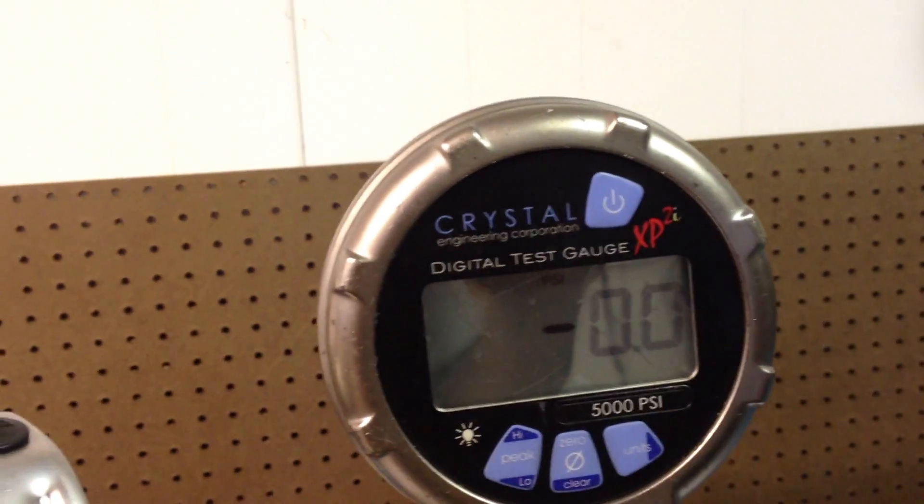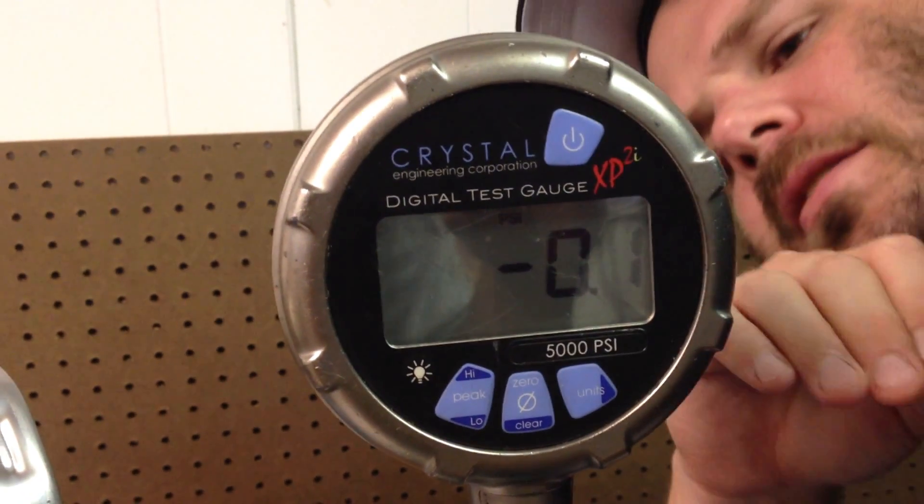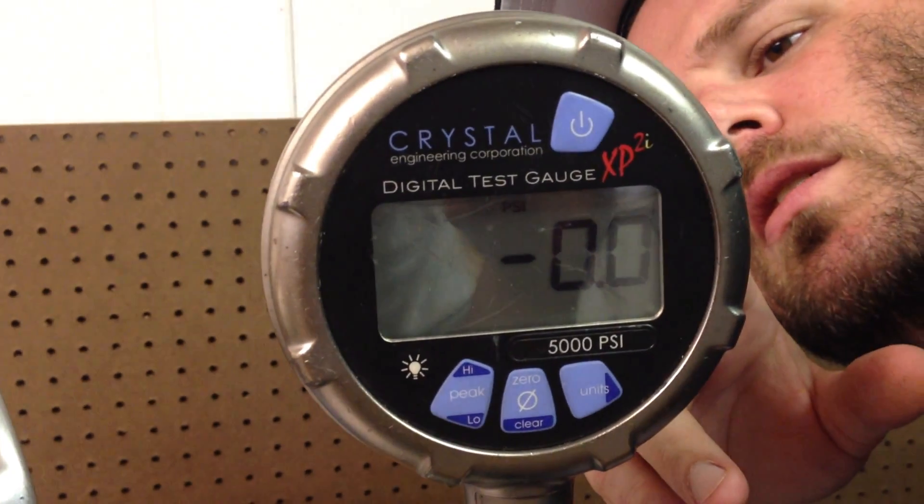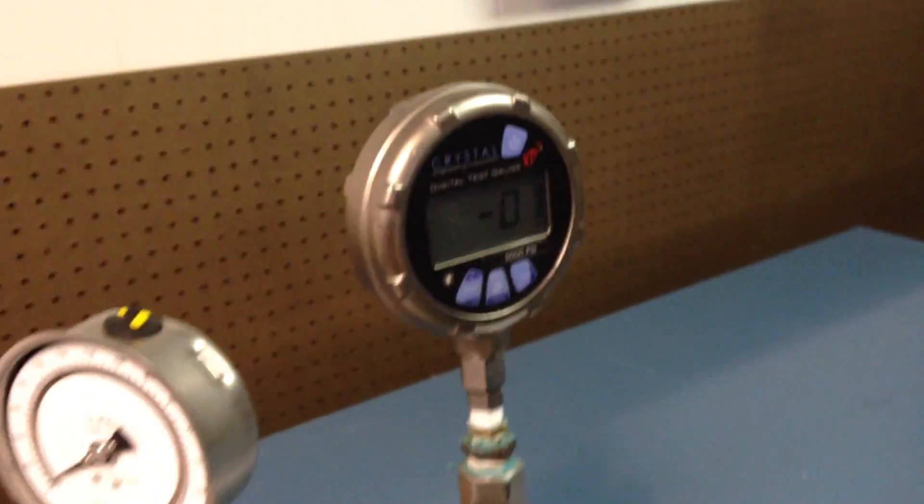Our standard is a crystal 5,000 PSI digital test gauge. The basic accuracy is 0.1% of reading, so each reading, that's the accuracy, not full scale.